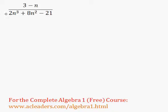Now, can we factor this trinomial down at the bottom here? We have 2n cubed plus 8n squared minus 21. We actually can't.